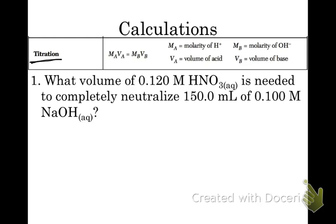So here, we have capital M, so that's the molarity. Capital V is the volume. And then you have A, which is the acid, or your H+ concentration, and B, which is your base, or your OH- concentration. So here, we're given, what volume of 0.120 molar HNO3 solution is needed to completely neutralize 150 mL of 0.100 molar NaOH?